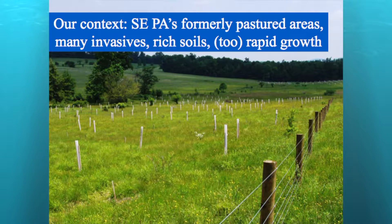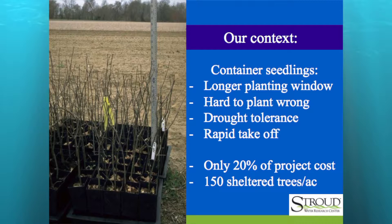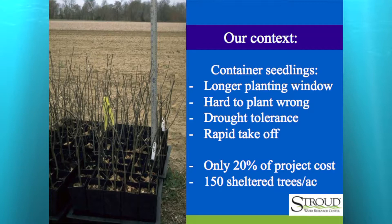If you're in New York, that's not your context — the trees aren't growing too fast there. I'm generally working with container seedlings, which gives us a longer planting window. You can have success with any types of seedlings, bare root included. Container seedlings have increased drought tolerance — in dry years they'll go dormant and make it through. The cost of plant material is only about 20% of the overall project cost, so it may not be the best place to save money.